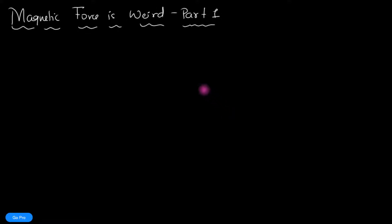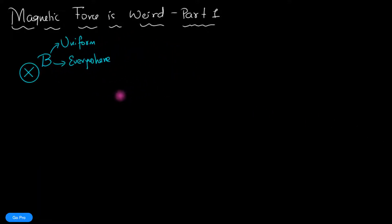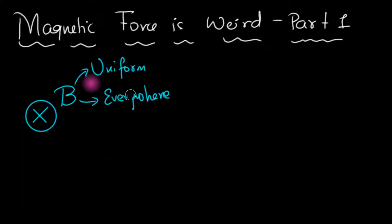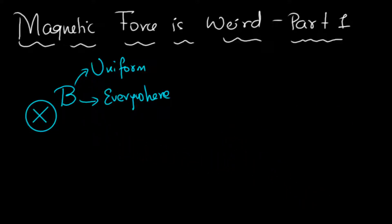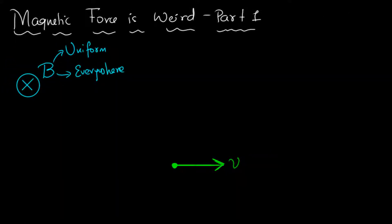I have said before and I'm going to say it again: magnetic force is very weird. But this time I'm going to explain to you exactly why it is weird. Let's take an example — here is a magnetic field, it is uniform, it is everywhere, and it's directed into the board. Let's consider a positive charge that is moving towards the right.